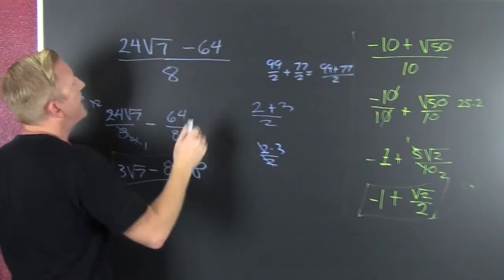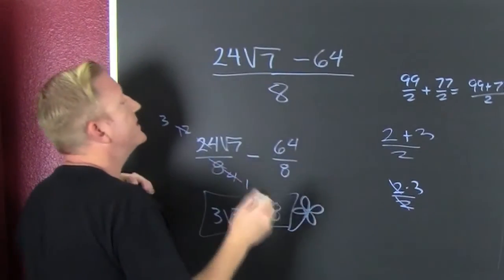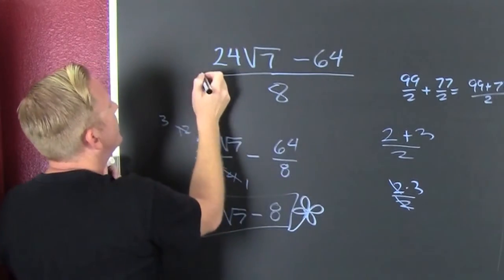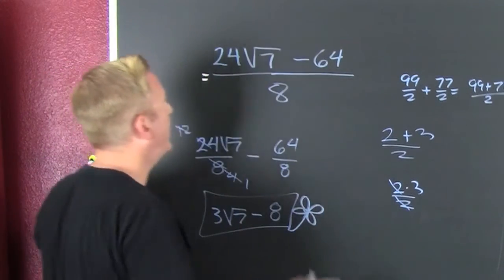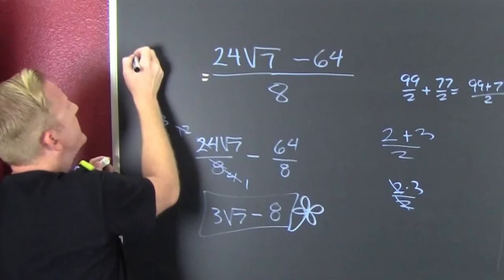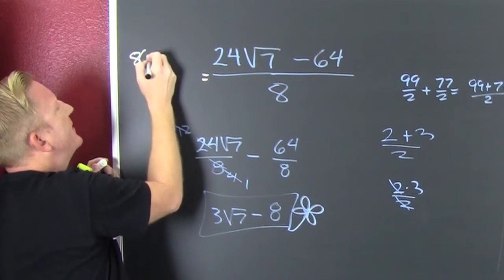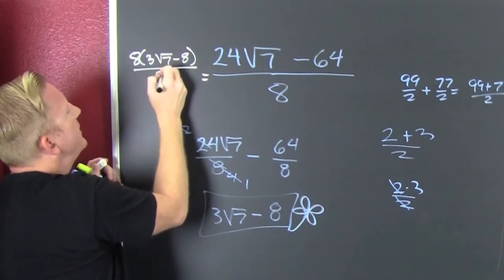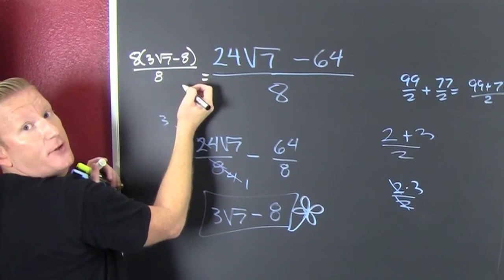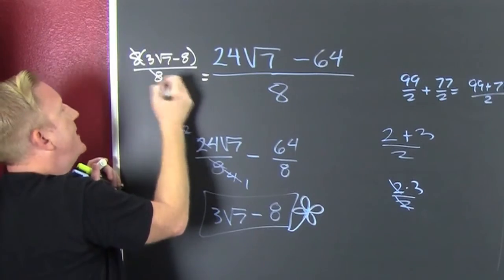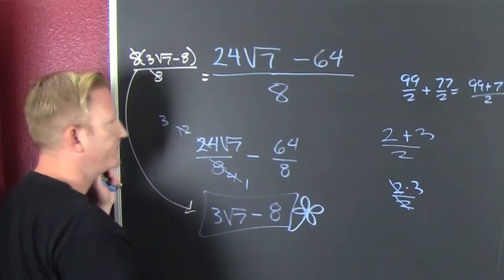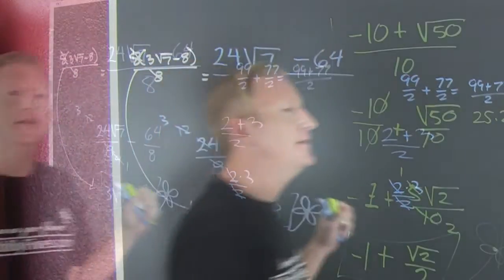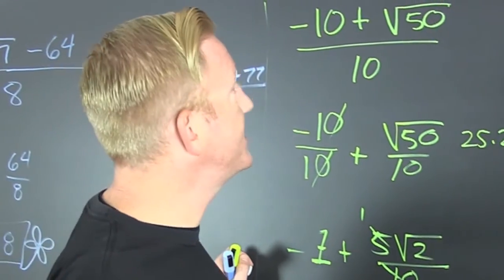So yeah. I see that your book wants a certain answer some type of way. And how did they get that way? What's in common here? Eight, great. So they pull an eight out and that's three root seven minus eight all over eight. Now this might be a better way, so they reduce and they get this.